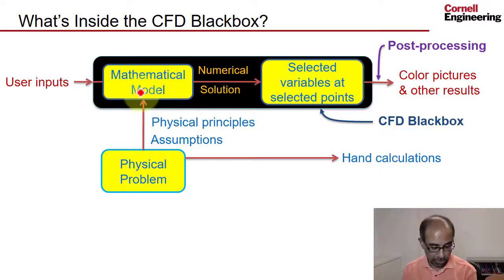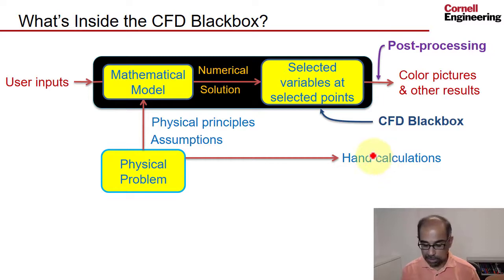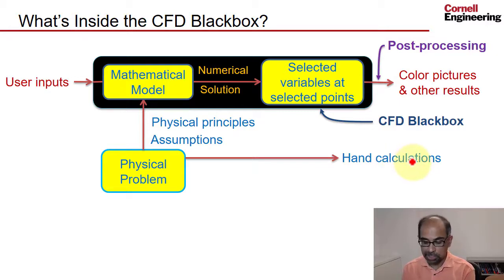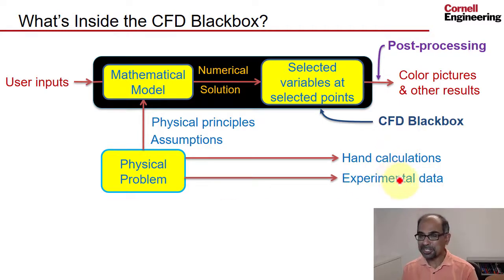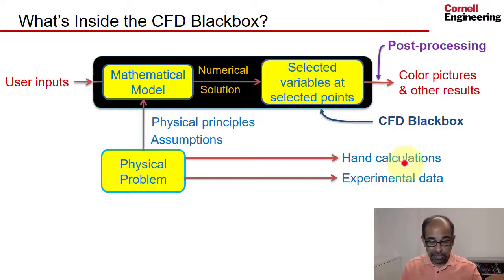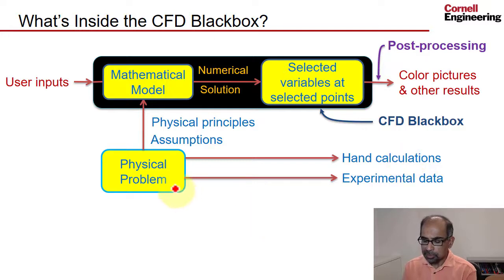One can also go back to the physical problem and make hand calculations — maybe you can approximate the mathematical model, and do scaling arguments, which textbooks do for heated flow in a pipe. But when one does that, one needs to know whether the tool is using the same mathematical model or a different one. In this case we also have experimental data that we can compare to. This framework is a good way to organize all these various pieces of information.